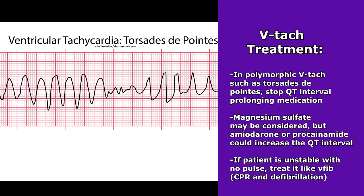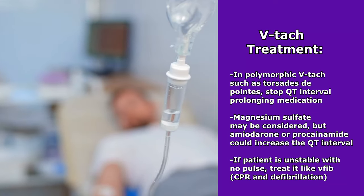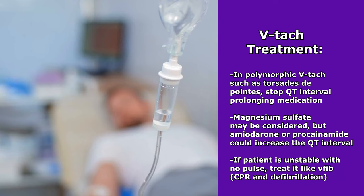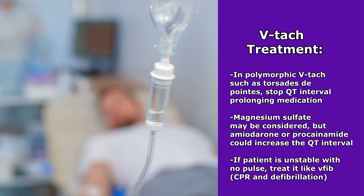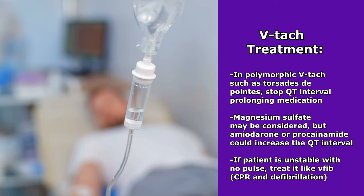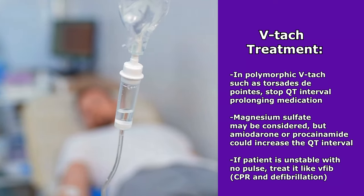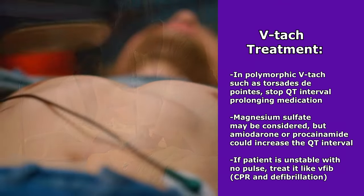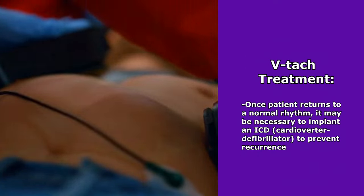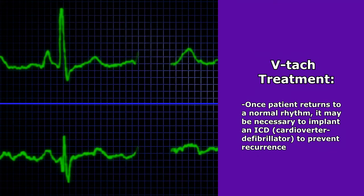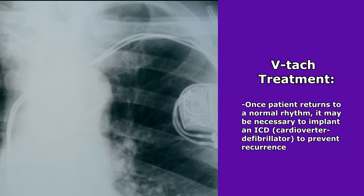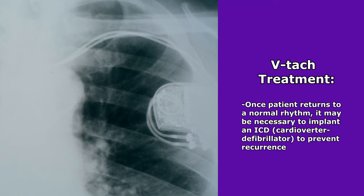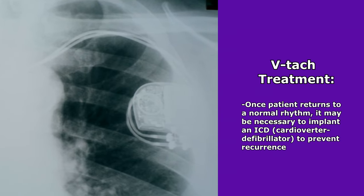In regards to treatment for polymorphic VTAC like torsades, one thing that can be given is magnesium sulfate, and then stopping any medications that prolong the QT interval. You would not want to give the patient amiodarone or procainamide, because those increase the QT interval. And of course, if the patient is unstable with no pulse, you'd want to treat it like V-fib with CPR and defibrillation. Once the patient is converted back to a normal rhythm, it may be necessary for them to get an implanted ICD — a cardioverter defibrillator — to prevent any further episodes.